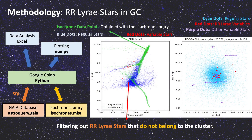Then I fitted the color magnitude diagram with an isochrone curve to filter out RR Lyrae stars that do not belong to the home cluster. I primarily use Python and Excel for data analysis.